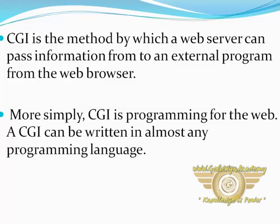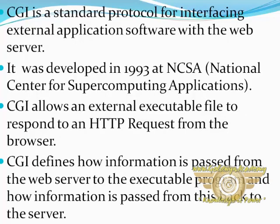CGI defines how information is passed from the web server to the executable program and how it is passed back, with the ability to connect external programs from the web browser. More simply, CGI is programming for the web and can be written in almost any programming language. CGI is a standard protocol for interfacing external application software with the web server, developed in 1993 at NCSA, the National Center for Supercomputing Applications.